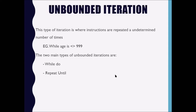An unbounded iteration is where instructions are repeated an undetermined number of times. For example, while age is not equal to 999. Our condition here is age not equal to 999. You may have five persons using this system — the first might enter 30, the second 15, the third 999. There is a situation where the first person might enter 999 or the last person might. We know the program will loop; we just don't know which individual will enter the terminating value.